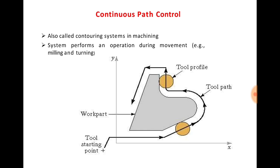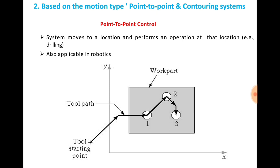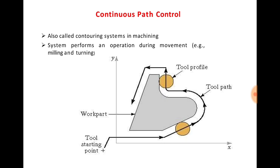Continuous path control is also called a contouring system in machining. The system performs an operation during the movement. Examples are milling and turning. In this diagram you can see a workpiece with a complex shape, and the cutting tool moves along the surface of the job — meaning you are interested in the path followed by the cutting tool. In such situations you use continuous path control.